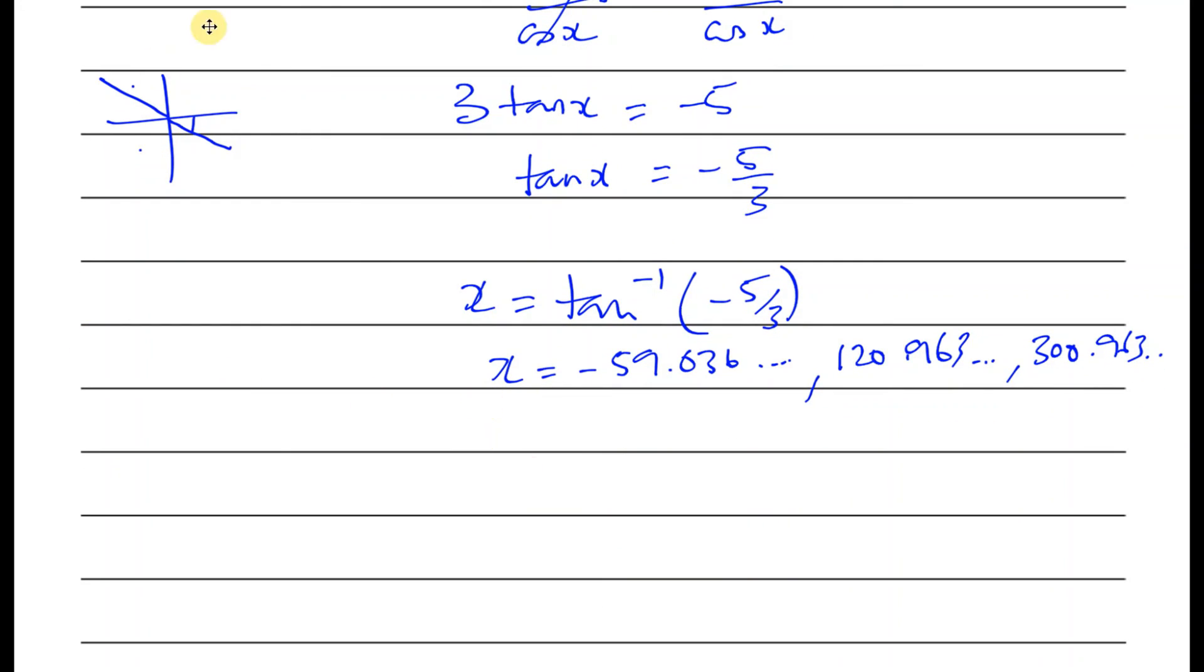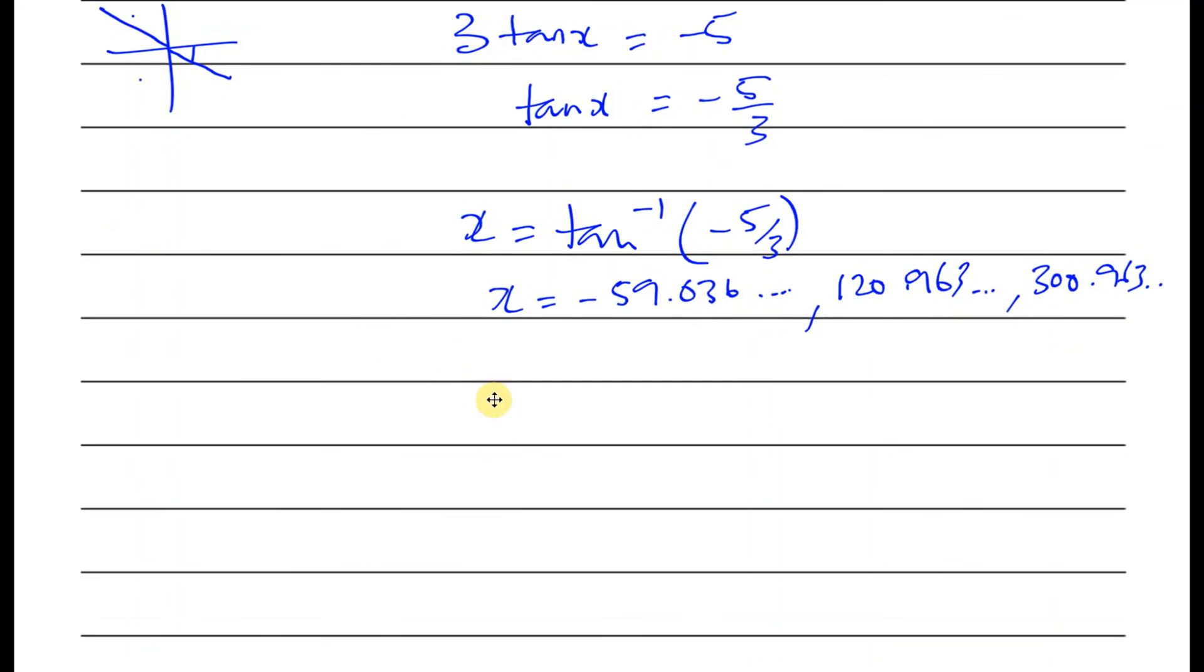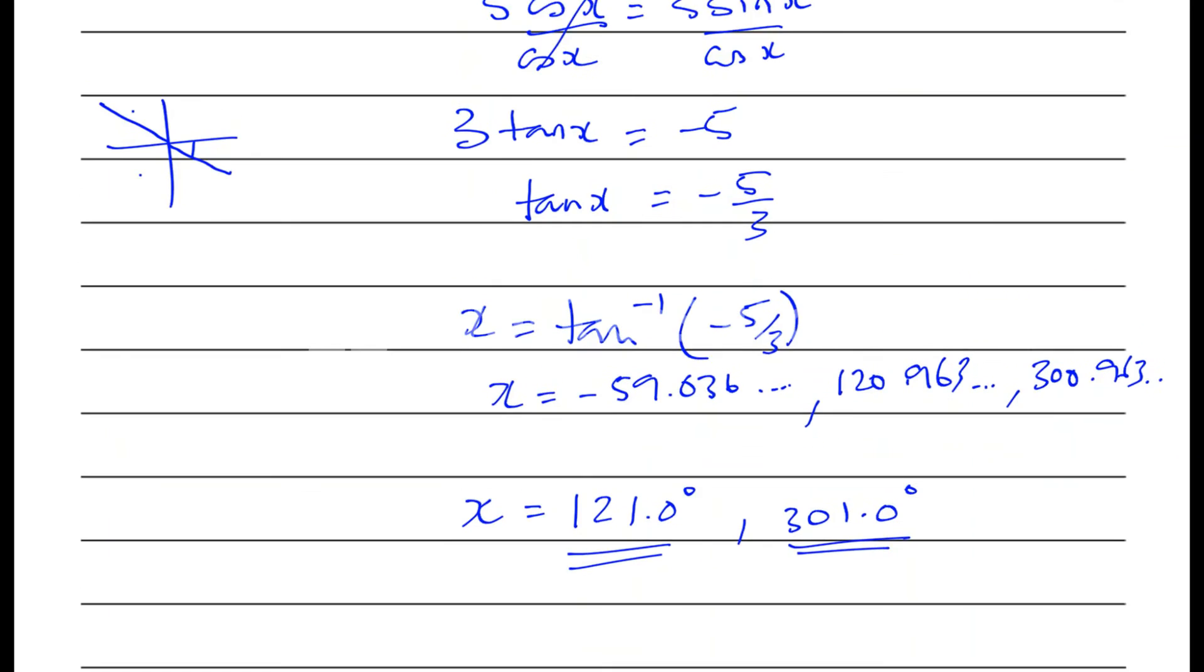So our two solutions are going to be those two rounded. It doesn't say anything so it should be one decimal place, that's the general convention, angles to one decimal place. That's going to be 121.0 because that 9 will cause that to become 10, so that'll become 121.0 and that'll be 301.0. And these are the two solutions rounded to one decimal place for this question, and there we have it.